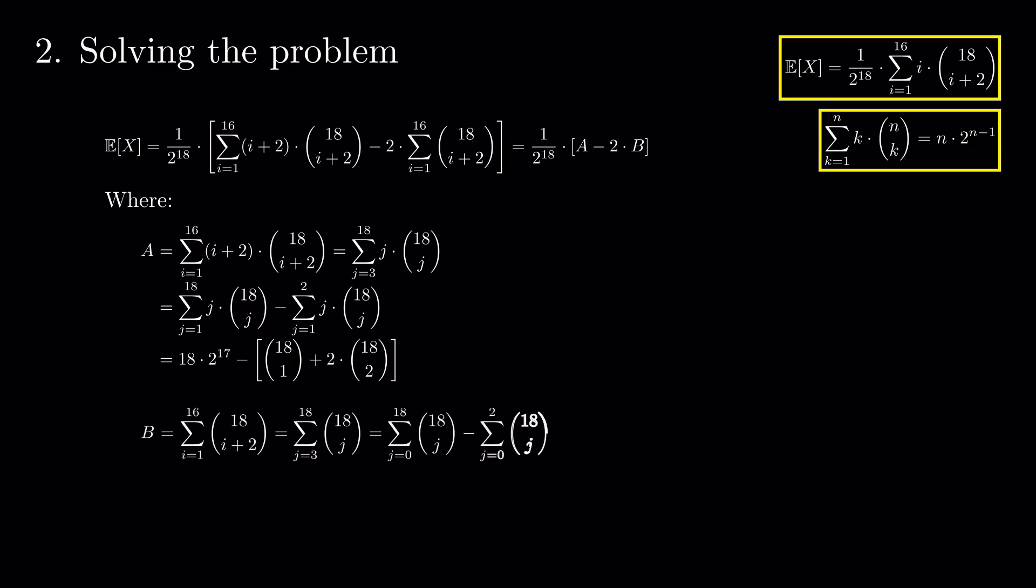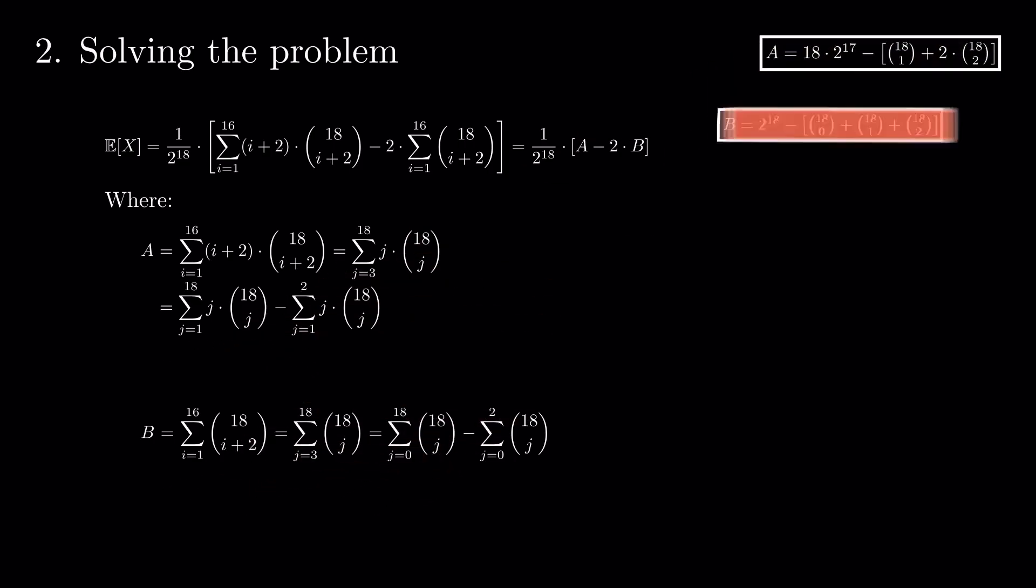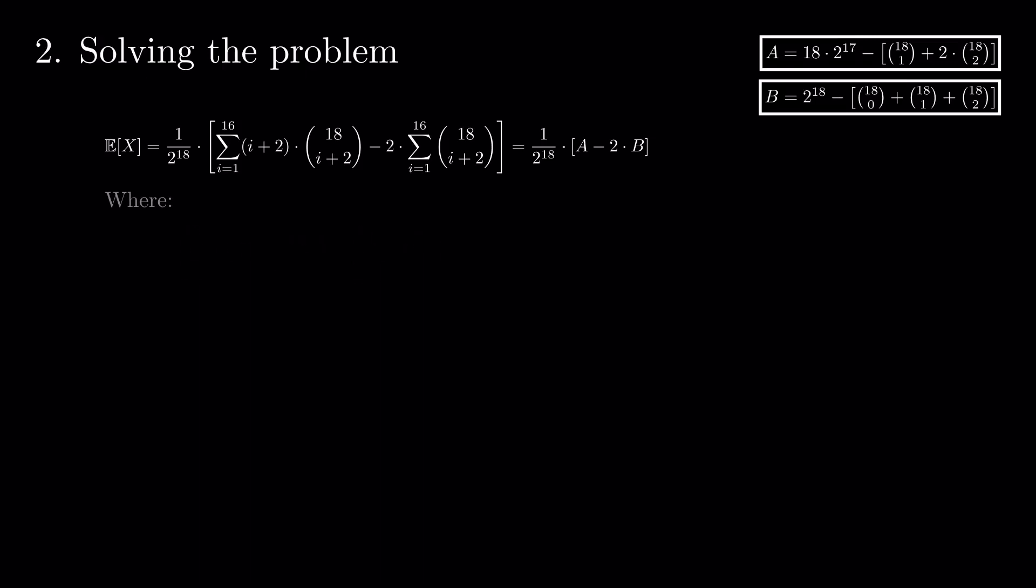For b, we apply the same replacement of i plus 2 by j and expand the sum. In the end, we replace a and b in the expectation formula and get that the expectation of X is 7 plus 20 divided by 2 to the power 18.